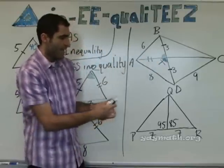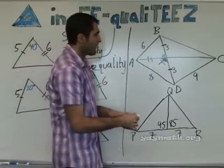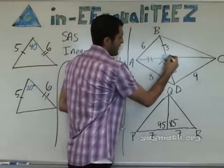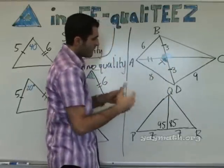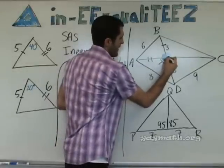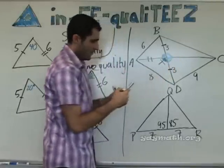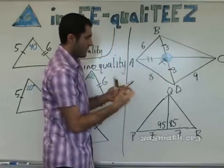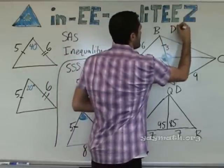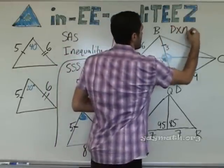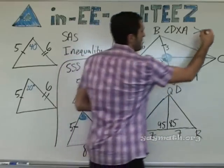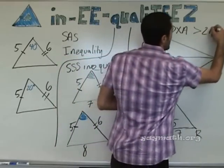We can mark it — this angle opposite it is bigger here. So we can write the answer: angle DXA is greater than angle BXA.